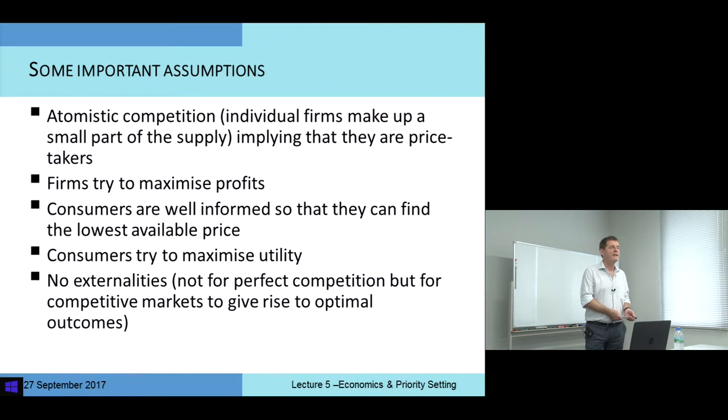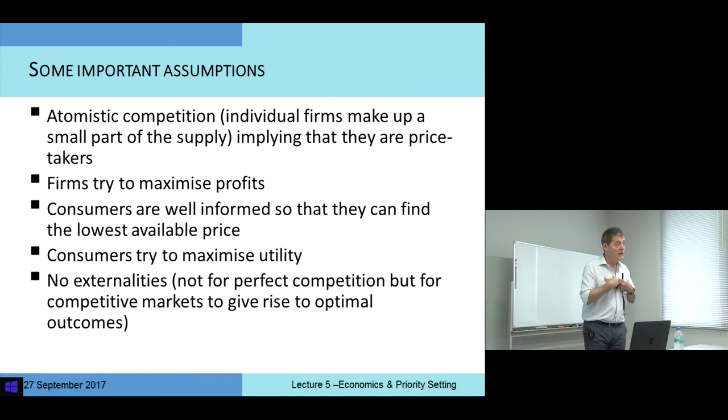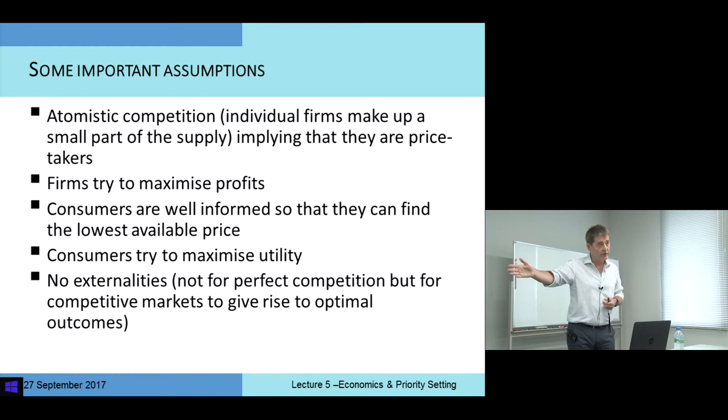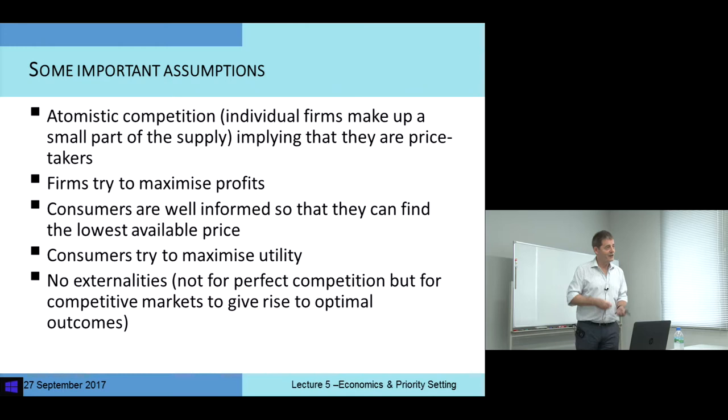Another important assumption — and this will tie back into social capital, which we've been discussing for a couple of days — is that there are no externalities. An externality in brief is a situation where my action, in possibly consuming a particular good, has consequences for me but also consequences for other people, and when I take my decision I'm not adequately reflecting the consequences for others. We need no externalities if competitive markets are to give us these optimal outcomes.